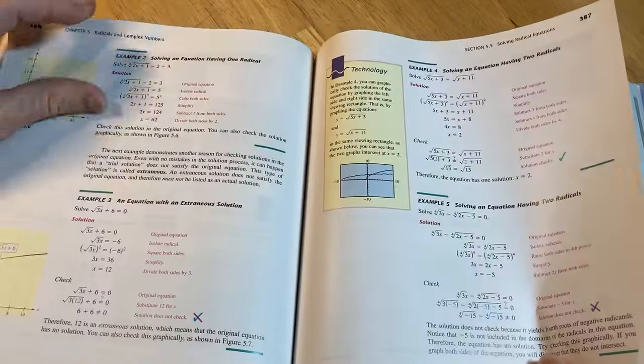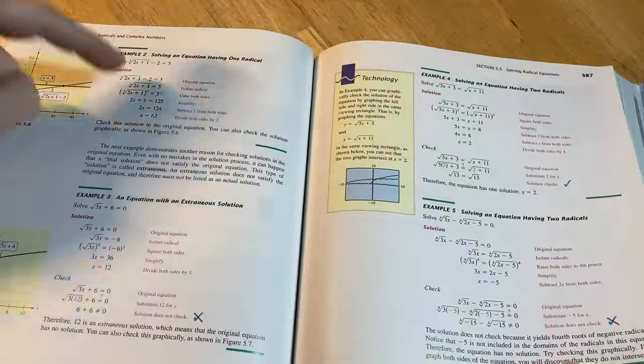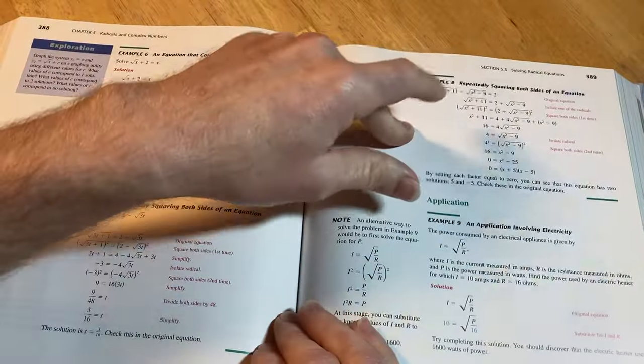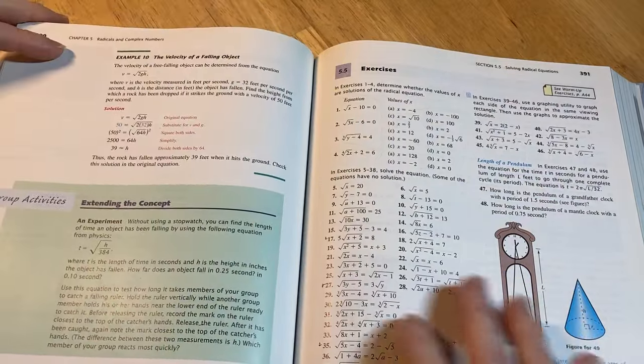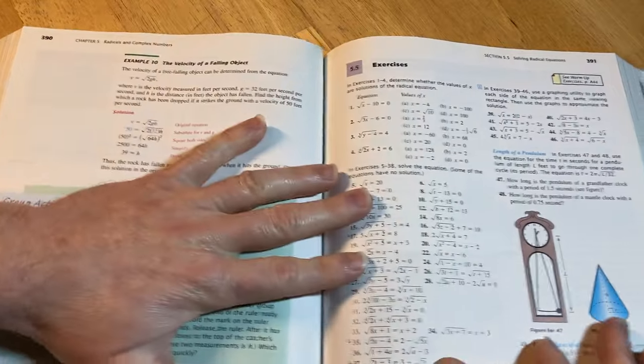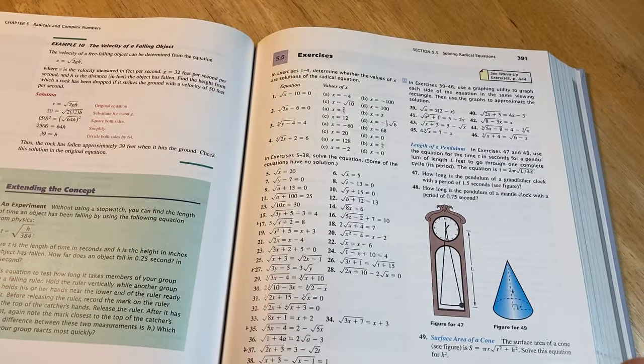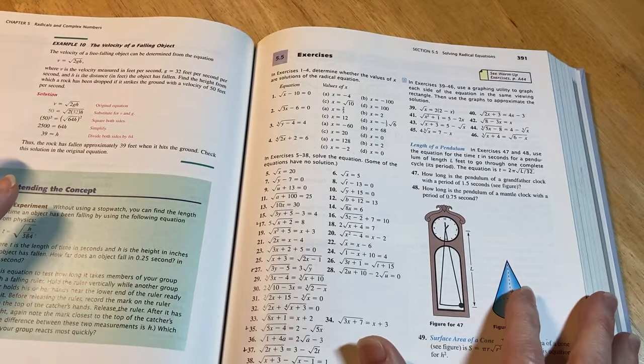Look at all of these examples. This is crazy. So you've got one, two, three, four, five, six, seven, eight, nine. It's just ridiculous. Ten examples and the last two are applications which are pretty cool actually. And then you have tons of exercises so you can become a solving radical equations master with a book like this.